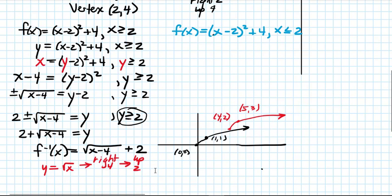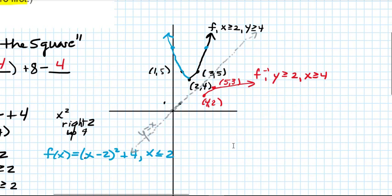Let's graph this f inverse on the same coordinate system as f. Originally, all the x values of the black portion of the parabola were greater than or equal to 2, and y was greater than or equal to 4. For f inverse, it's reversed: the y values are all greater than or equal to 2 and the x values are greater than or equal to 4. You can see it's a mirror image of the black portion across the line y equals x.